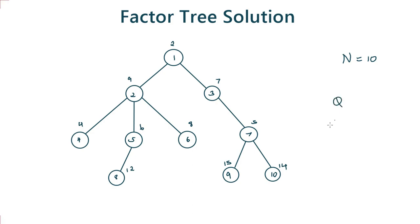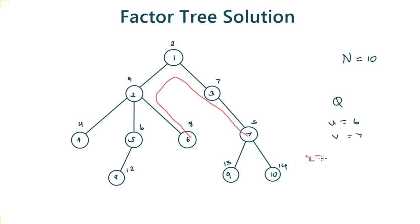We are given q queries and each query consists of integers u and v. Say u is equal to 6 and v is equal to 7. We need to consider the path from node u to node v. So the path from node 6 to node 7 will be this. We multiply all the values of the nodes lying on this path. So x equals 8 (node 6) × 9 (node 2) × 2 (node 1) × 7 × 5 (node 7). We need to return the number of factors that x has.